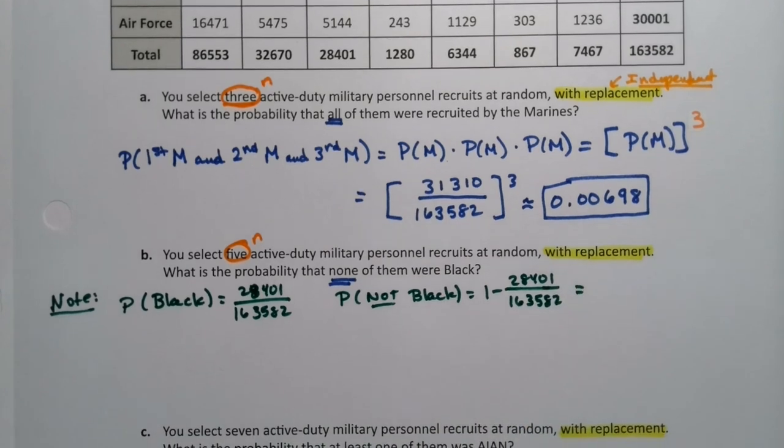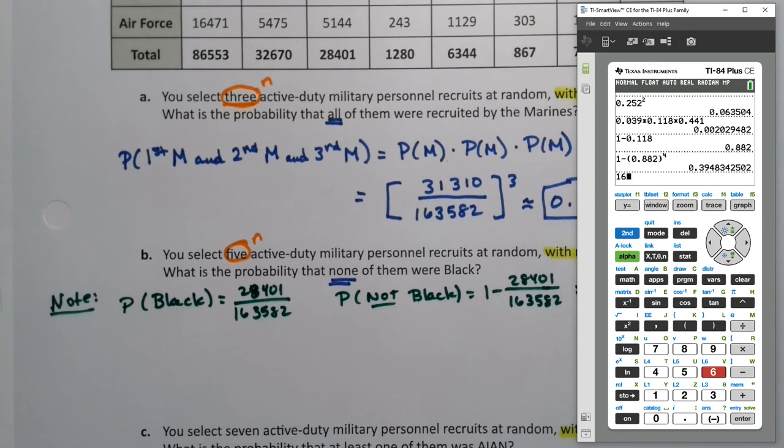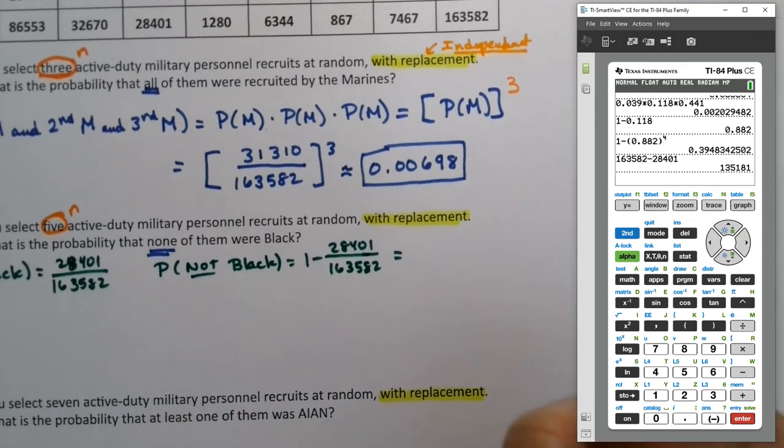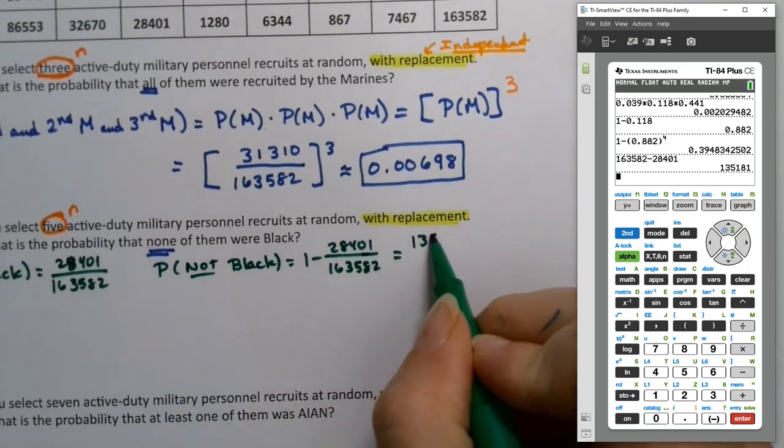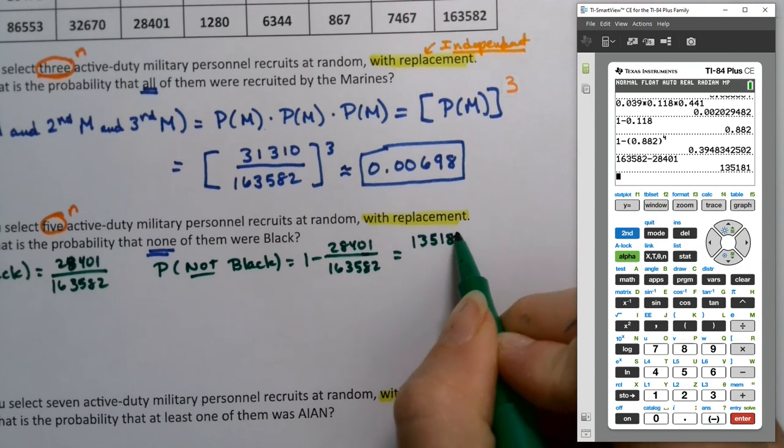Now I know you're thinking, oh no, that'd be really difficult. Not really. What you're saying is there were 163,582 recruits. If I take out the 28,401 that were black, gotta love the military, they know about that single person. So 401 very precise. That leaves us 135,181.